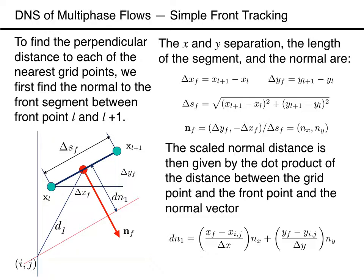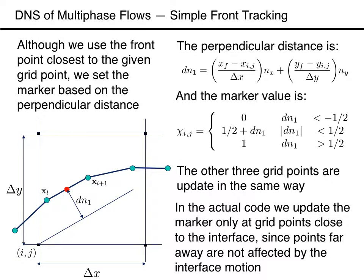The perpendicular relative distance between a given front point and the lower left-hand corner point on the fixed grid, or point i,j, or dn1, is then equal to the projection of the distance vector onto the normal: (xf minus xi,j) divided by delta_x times the x component of the normal, plus (yf minus yi,j) divided by delta_y times the y component of the normal. Notice that the perpendicular distance is a signed quantity that is negative on one side of the interface and positive on the other.